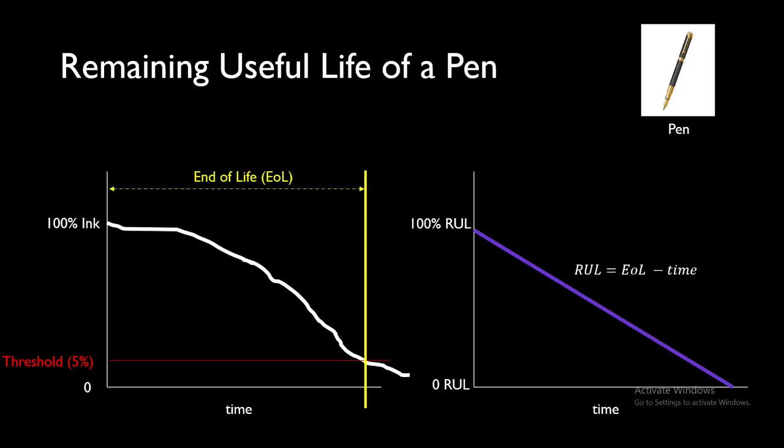The end of life minus the current time will be your remaining useful life. If we want to convert this into percentage term, just divide by the end of life, so we'll get another percentage term.